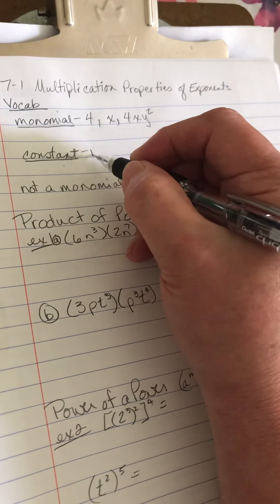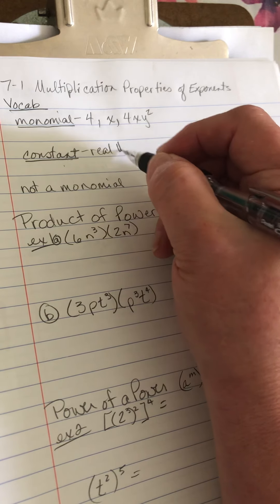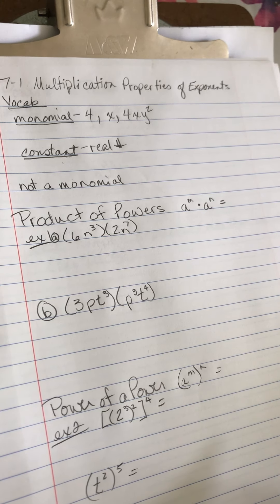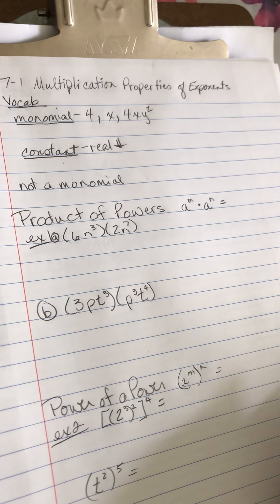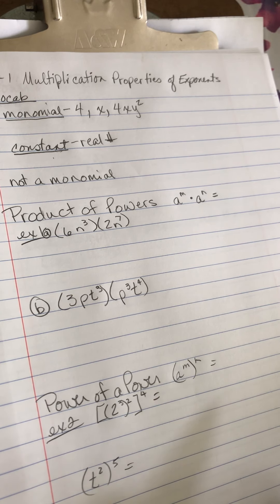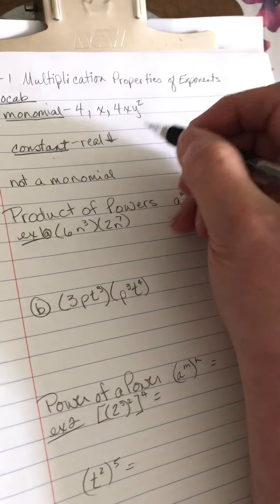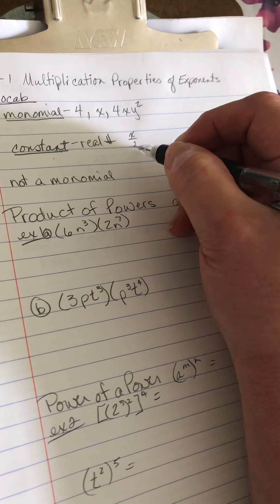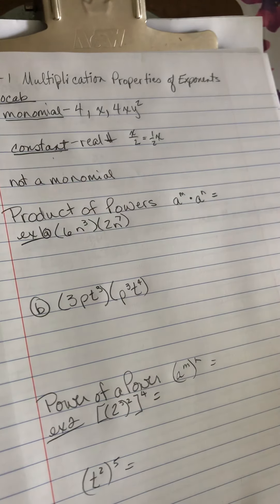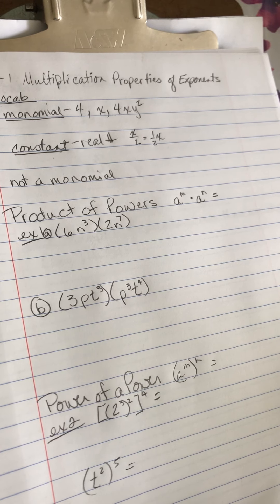A constant is just a real number, which means it could be a whole number, it could be negative, it could be a fraction. That's important because if I have X over 2, that's the same as one half times X. That's a monomial, one half times X, it's a product.